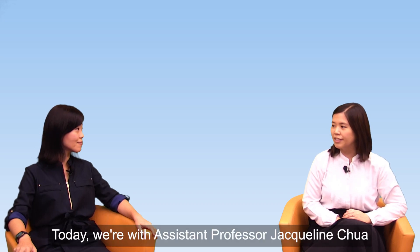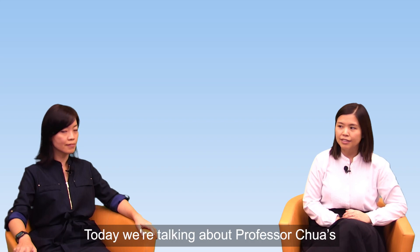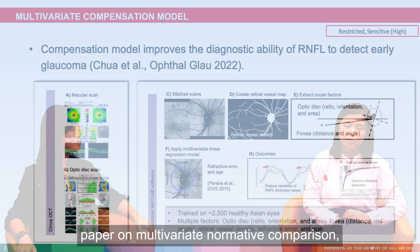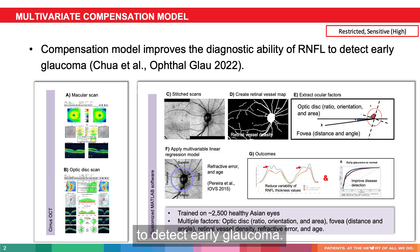Hello, today we are with Assistant Professor Jacqueline Chua, Generate Principal Investigator, Ocular Imaging Group in SERI. I'm Dr. Lo from Singapore National Eye Centre. Today we're talking about Professor Chua's paper on multivariate normative comparison, a novel method for improved use of RNFL thickness to detect early glaucoma.